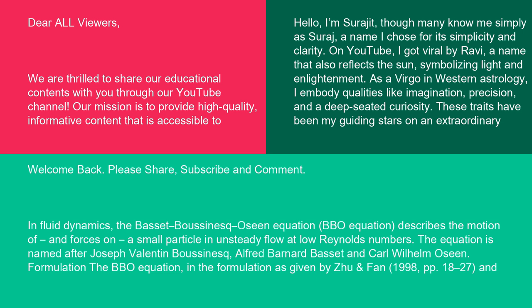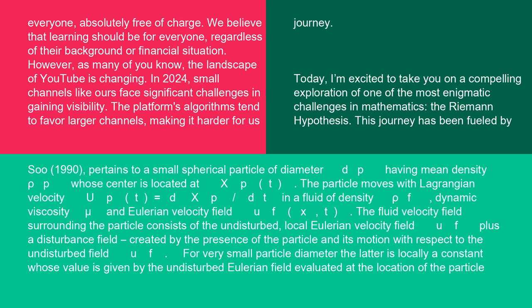Formulation: the BBO equation in the formulation as given by Zhu and Fan (1998, pages 18 to 27) and Su (1990) pertains to a small spherical particle of diameter dp having mean density ρp whose center is located at xp(t).